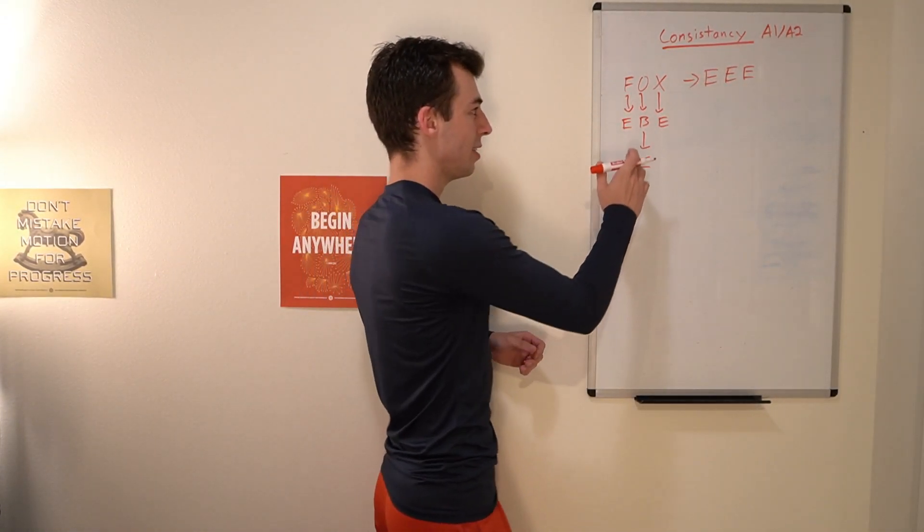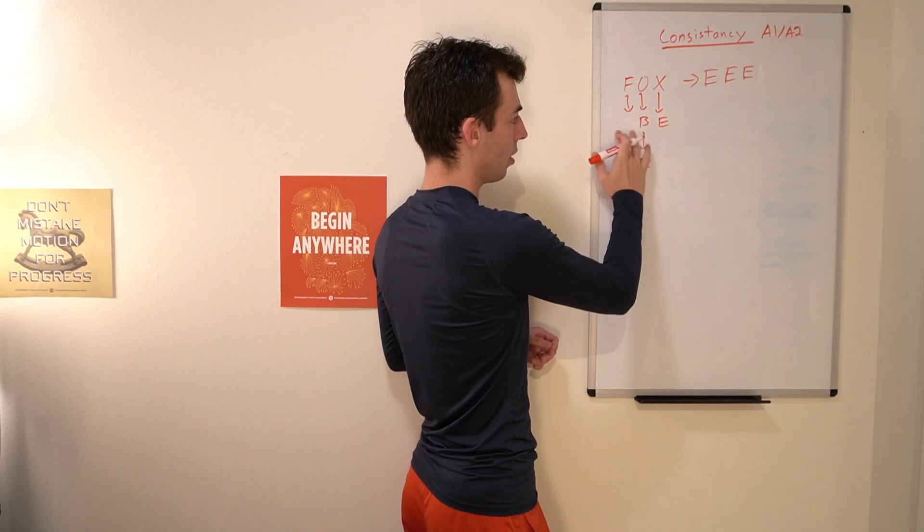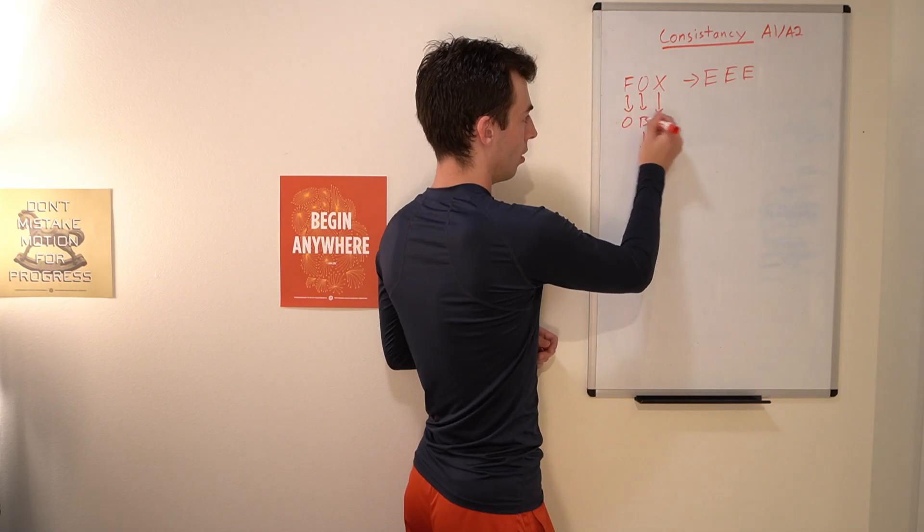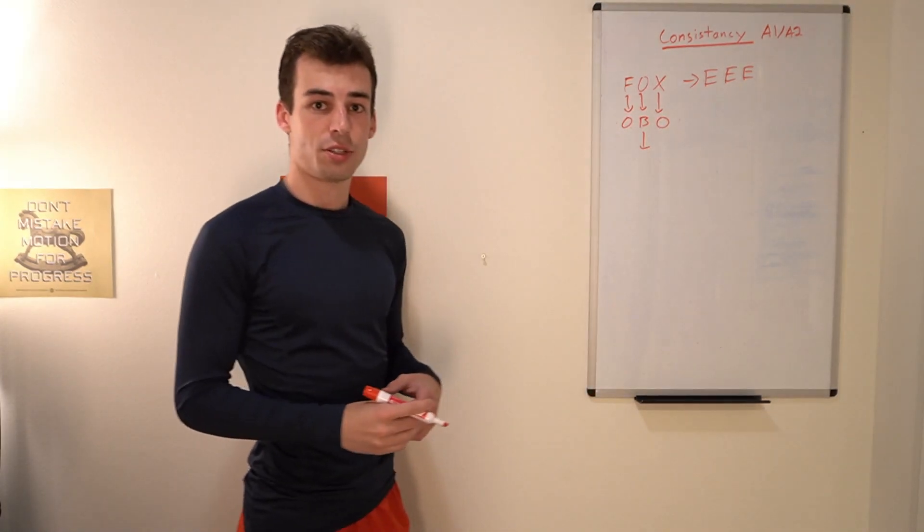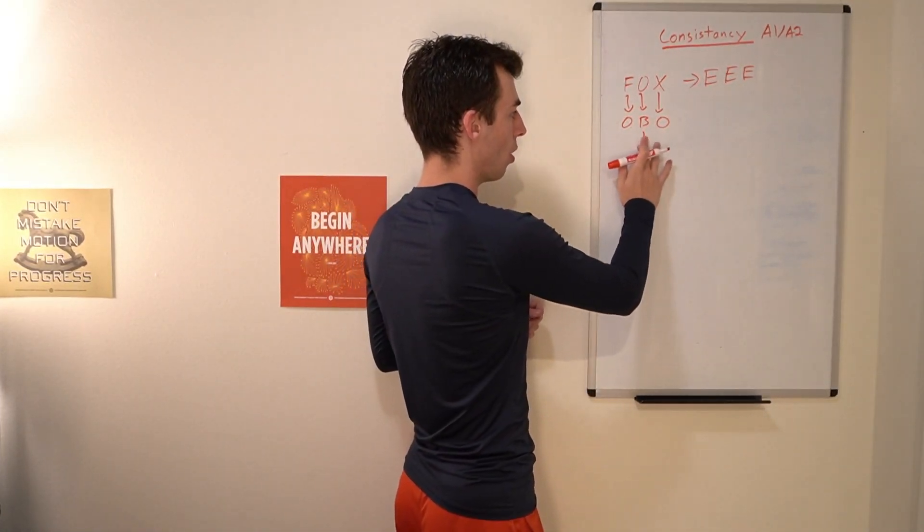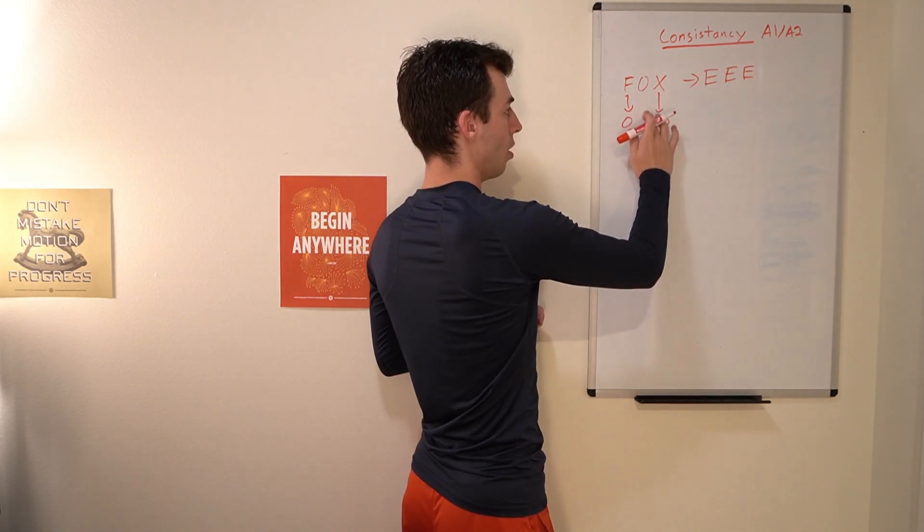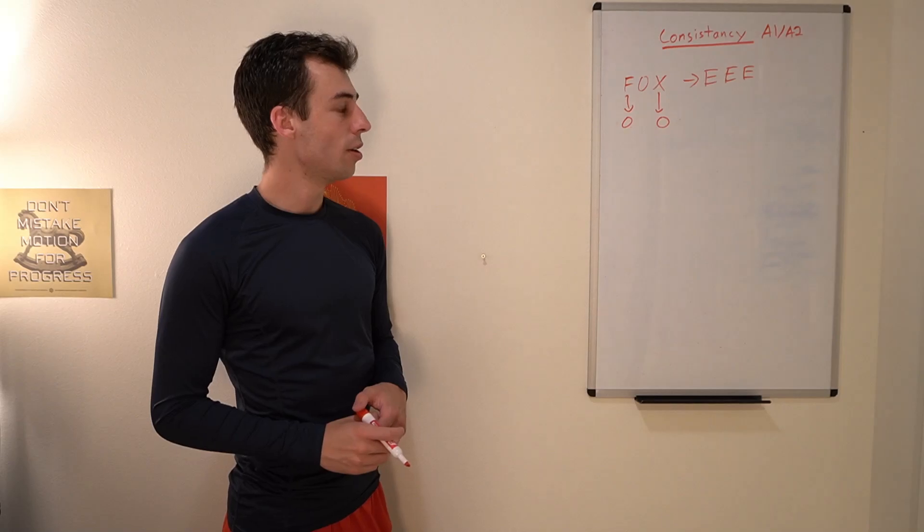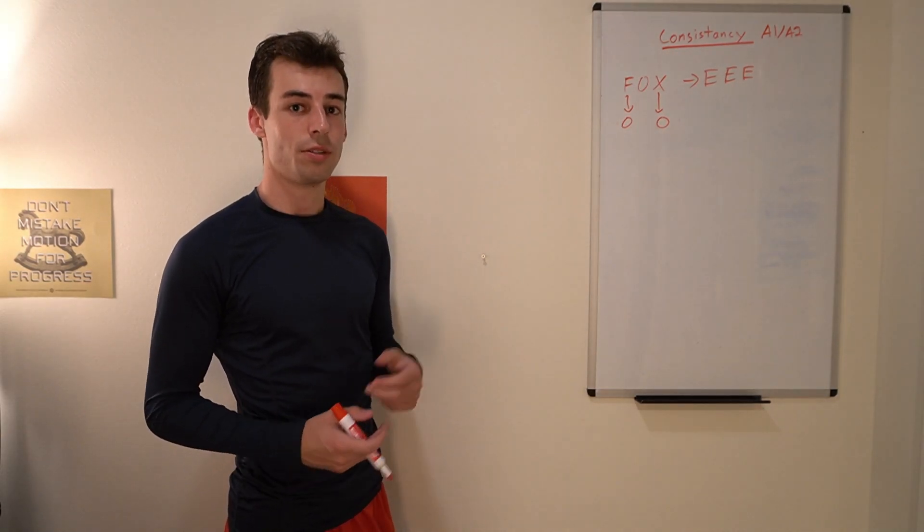We can do better though. Instead of turning it into EEE, we can turn it into OOO. Again we can turn the F and the X directly into the character O and the O obviously we don't have to touch. So in this case we can make this string fox consistent using just two seconds, just two operations.